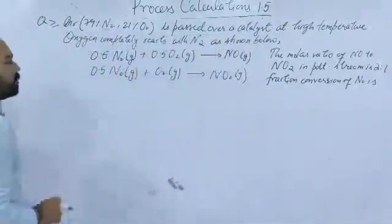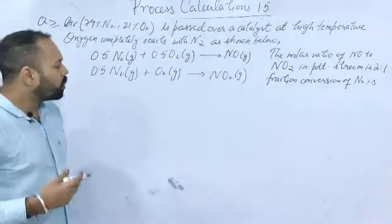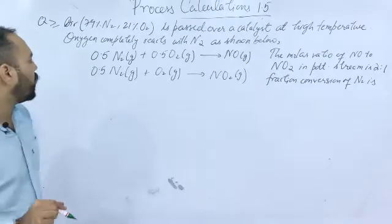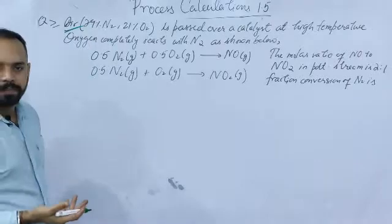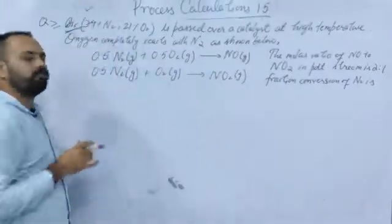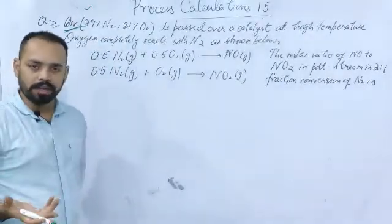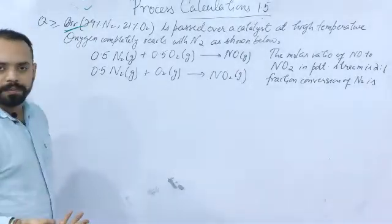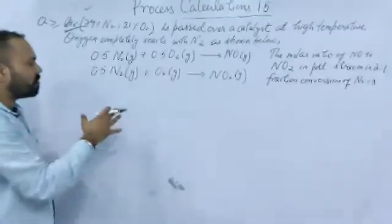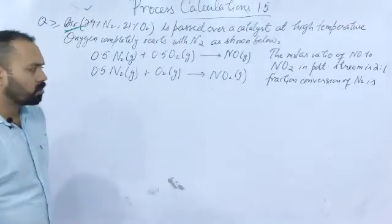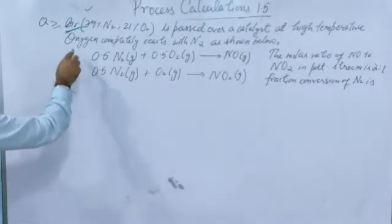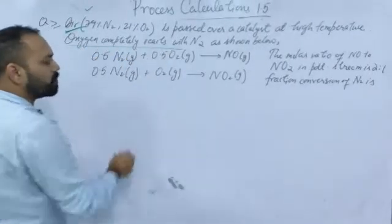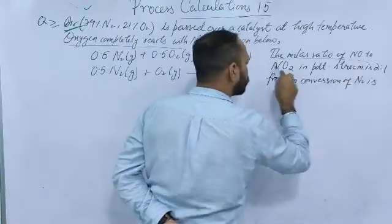The reactions are given. What should be your basis — oxygen or nitrogen? In this problem, air composition is known, so you can take air as basis. Can you take oxygen as basis? Yes. Nitrogen as basis? Yes, nitrogen composition is also known. The conversion of oxygen is 100%, and the molar ratio of NO to N2O in the product is 2 to 1.